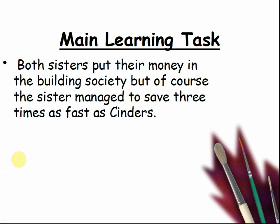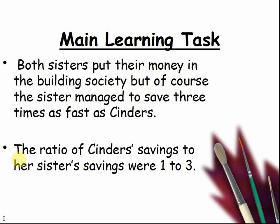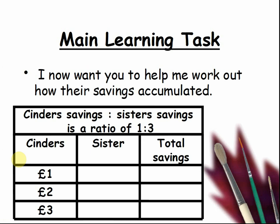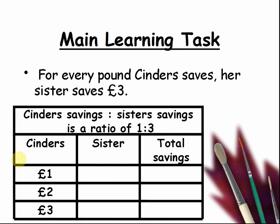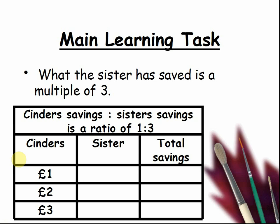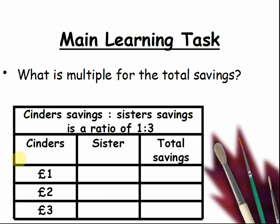Both sisters put their money in the building society, but of course the sister managed to save three times as fast as Cinders. The ratio of Cinders' savings to her sister's savings was 1:3. Now I want you to help me work out how their savings accumulated. Pause the video and complete this table. Every pound Cinders saves, her sister saves three pounds. What the sister has saved is a multiple of three. What is a multiple for the total savings? Pause the video and work it out.